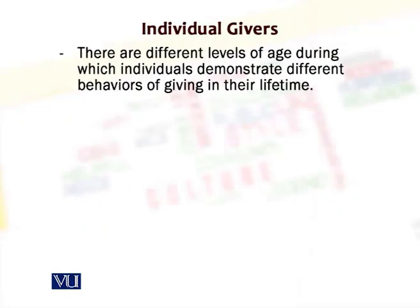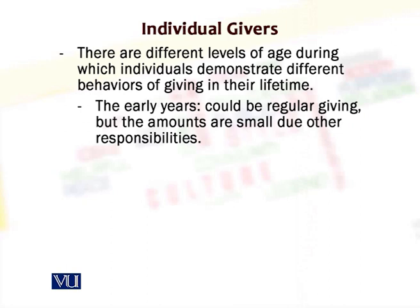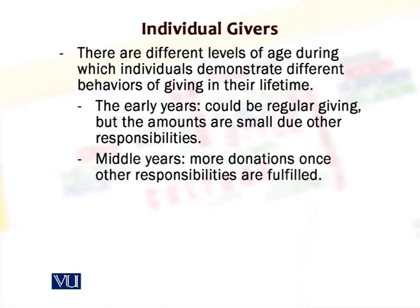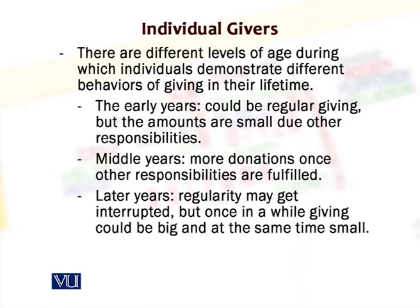In the classification of donors by age brackets: people between their 30s and 50s may be regular donors but not big donors because they have other responsibilities in life — like their kids, their education, and so on. People in the middle ages, say between 50 and mid-60s or 70s, are bigger donors because they have fulfilled most of their responsibilities and are now in a position to donate more. Then there are donors in old age — the number is not all that great, but donations could be huge, so you have to develop personal relationships with such donors.